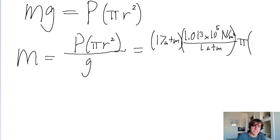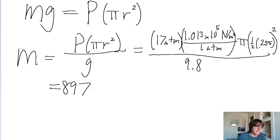Multiplied by the square of the radius, and the problem tells us that the diameter is 0.255. So half of that is what's being squared, and all of this divided by 9.8 meters per second squared. So if you put this into a calculator, then you get a mass of about 8,970 kilograms. And that is the answer to this problem.